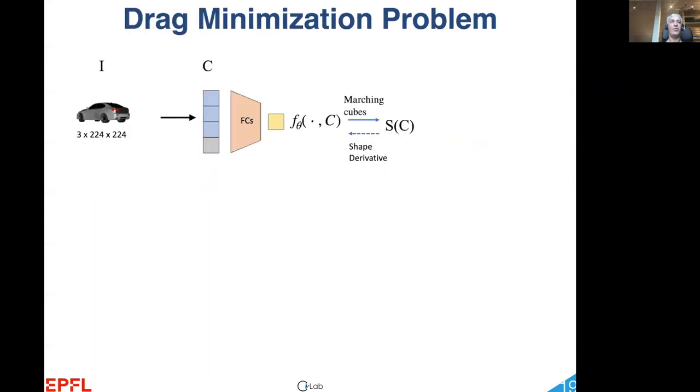To impose the right kind of priors on the shape space we want to explore, we couple our drag estimator D to the F theta function we introduced before. This yields a differentiable function that takes the code C as input and returns the drag D of C associated to the 3D shape S defined by C.